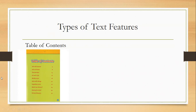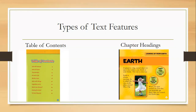The table of contents helps you find something specific without reading the entire book. Sometimes the books are really long and you only want information on what the ants eat, so you just find that page and go to it. The table of contents is really helpful when you're looking for something very specific about what you're reading about.